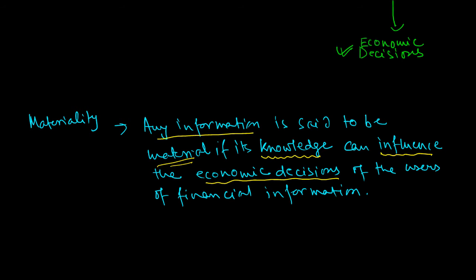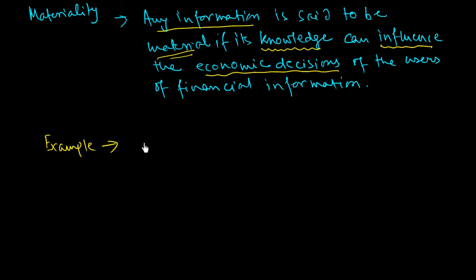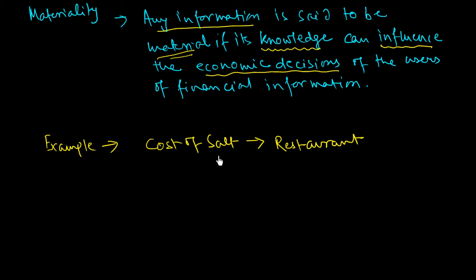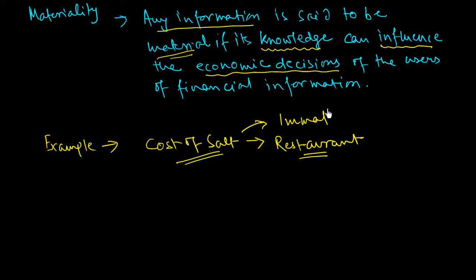Let us see some examples of material information. The cost of salt in the list of expenditures of a restaurant need not be shown separately, because the cost of salt is a very meager and small amount in the total expenditure of a restaurant — it is immaterial. So the financial statement should not show the cost of salt as a standalone item of expense; it should club the cost of salt with other immaterial classes of expenses and generalize it.